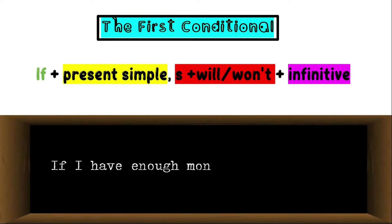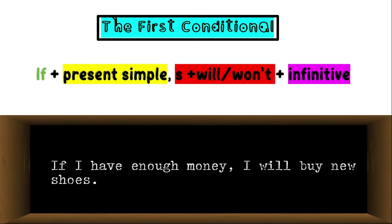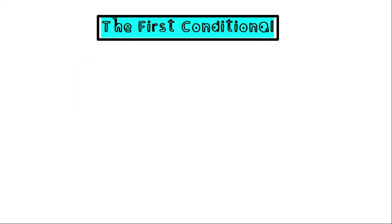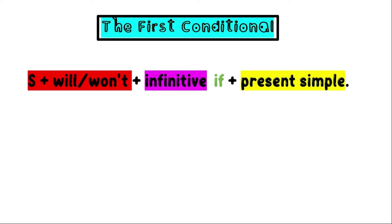For example: if I have enough money, I will buy new shoes — if plus present simple. We can also form the first conditional with the if clause coming at the end. So we have subject plus will or won't plus infinitive base form, and then the if clause at the end, also in the present simple.